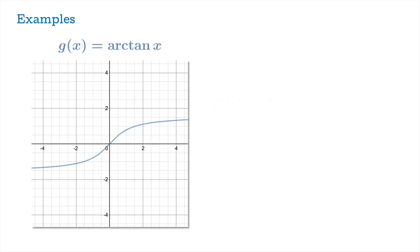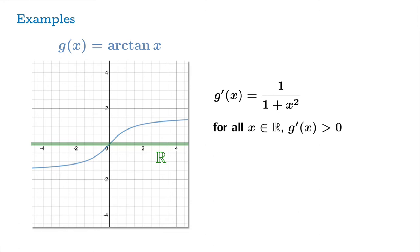Here's the arctangent function. And once again, we suspect that this is strictly increasing, even though there are horizontal asymptotes in both directions at pi over 2 and negative pi over 2, so it flattens out. Nevertheless, we think it continues to increase as you move left to right. The derivative function is 1 over 1 plus x squared, and certainly for all real numbers the value of that function is positive. And because the value of the derivative is positive throughout the open interval from negative infinity to infinity, we conclude that g is strictly increasing on all of ℝ.